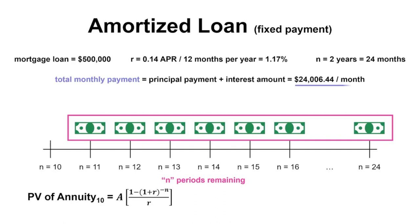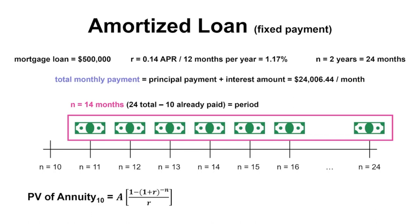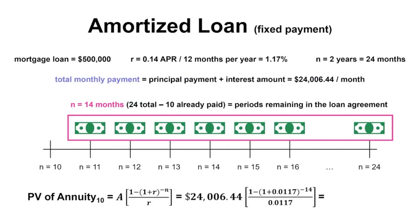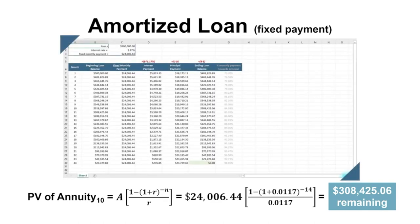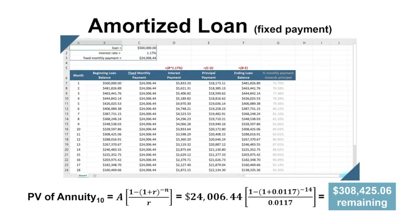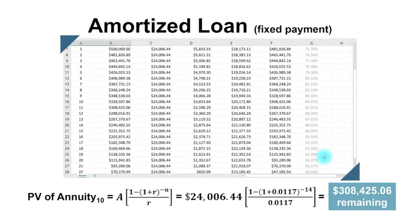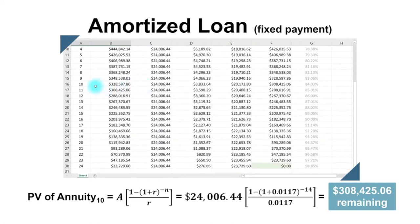First, our C value is $24,006.44. The interest rate is 1.17%, and N is 14 — 24 periods total minus 10 periods that have already been paid. By plugging these values into the first half of the formula, we calculate the value of the total loan after 10 months is equal to $308,425.06. I remind you that the ending balance of one period is the beginning balance of the next period. When we look back to the amortization schedule we created before, we can confirm that the balance of the loan at the beginning of month 11 is indeed $308,425.06.